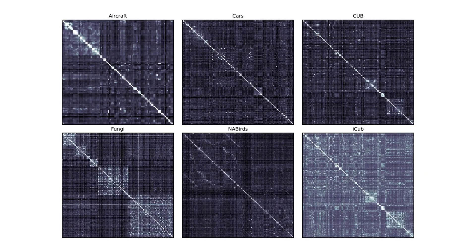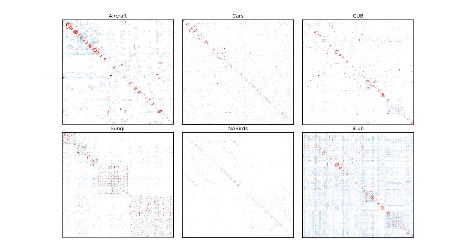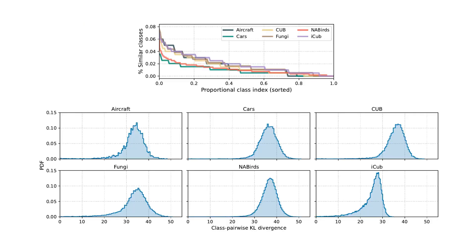We also show a KL divergence matrix for each dataset. The matrix shows the similar class confusion between each pair of classes, with brighter color showing lower KL divergence or higher confusion. We also show the confusion matrix, where red indicates mistakes corresponding to a similar class, and blue indicates mistakes in a non-similar class. We've defined similar classes as those where the KL divergence is more than 3 standard deviations below the mean. Similar class confusion, which is at the crux of FGVC, is still a key challenging factor, but it also doesn't account for all the mistakes.